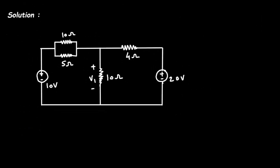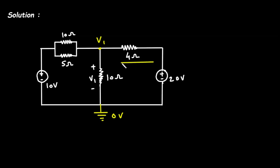First, let's assume one node — let's call it node V1 — and let's say this is the reference node, which has zero voltage. Now we have to assume all the currents flowing towards this reference node.